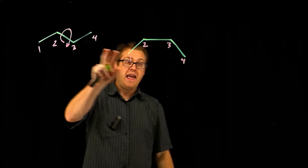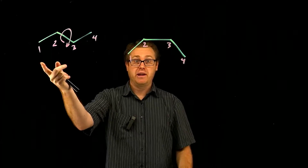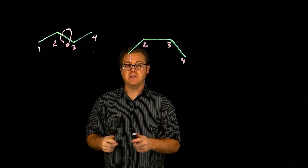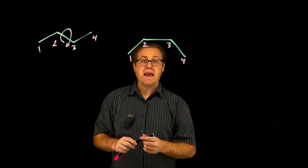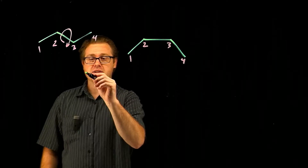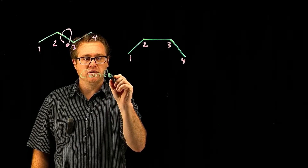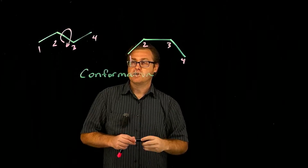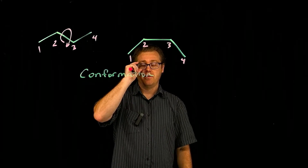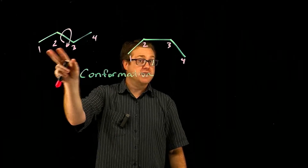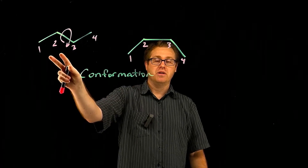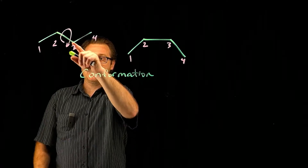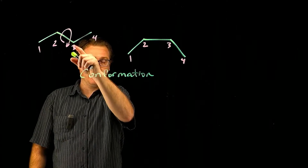This is butane, and that is butane. But you can clearly see there's a visual difference. We have a name for this difference — that is called a conformation. Those are conformations of one another, and they are still the same molecule, just in different conformations based off of the rotations of these bonds right here.